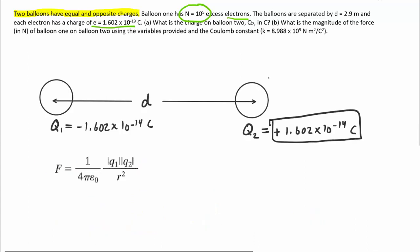Now in order to solve part B, which asks us for the magnitude of the force in newtons of balloon one on balloon two, we're going to use Coulomb's law, which we have rewritten on the bottom right here. It's important to note that this term right here, one divided by four pi epsilon, is equivalent to the Coulomb constant K that is mentioned in the question right up here.